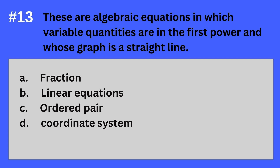Question 13. These are algebraic equations in which variable quantities are in the first power and whose graph is a straight line. A. Fraction. B. Linear equations. C. Ordered pair. D. Coordinate system. The answer? It's B. Linear equations. These are algebraic equations in which variable quantities are in the first power and whose graph is a straight line — Linear equations.